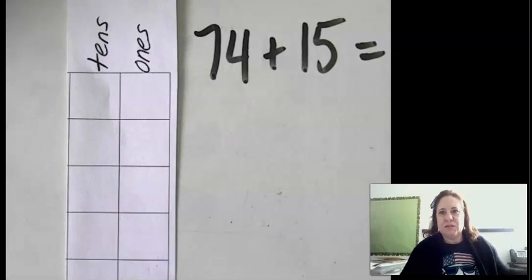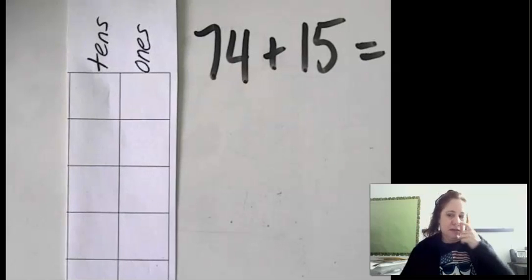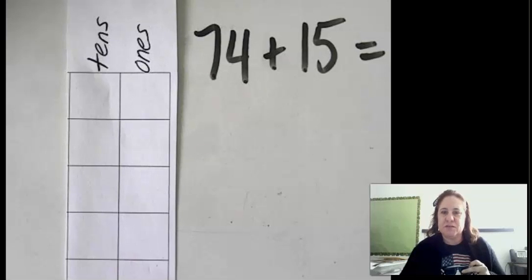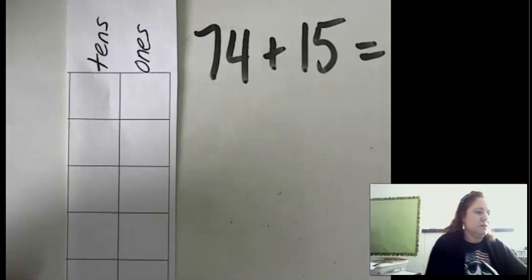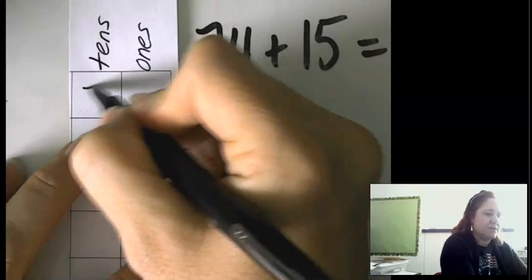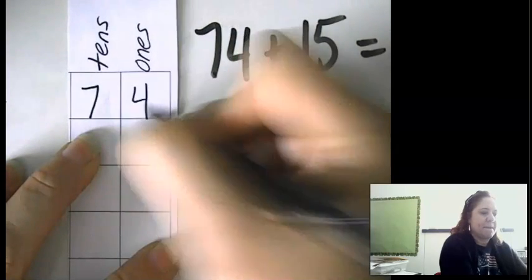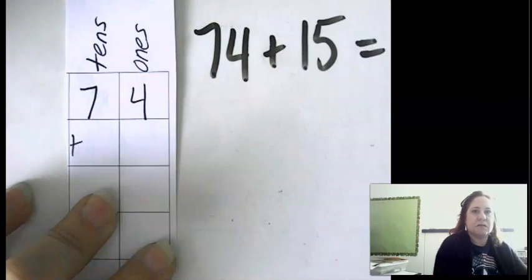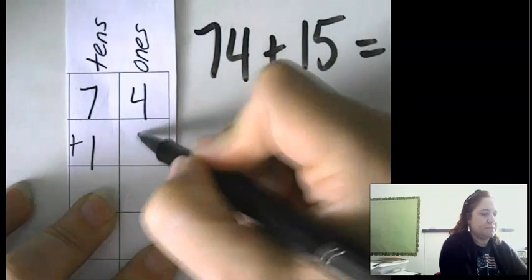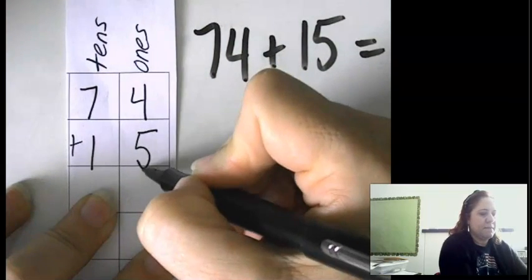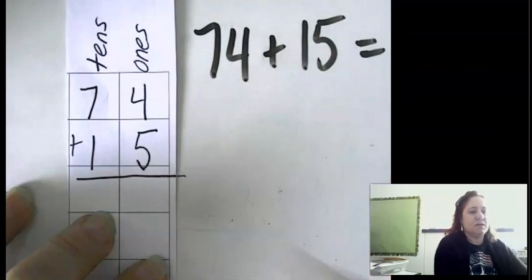So the first thing that we need to do is to stack the numbers on top of each other. Here, we have 74 plus 15. Okay, draw a line on the bottom there.